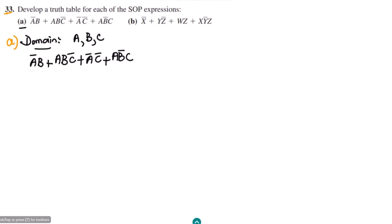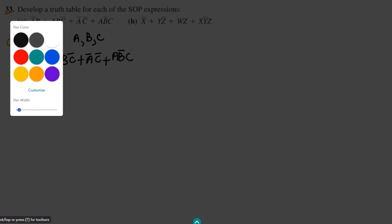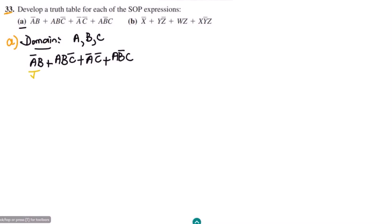The missing term in the first part is C, and the missing term in the last part is B. So what we have to do is use (C plus C prime) here and multiply it with the first term, and similarly use (B plus B prime) and multiply it with the last term.